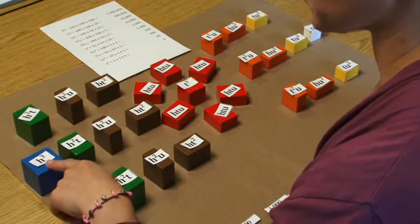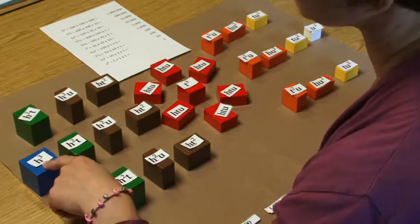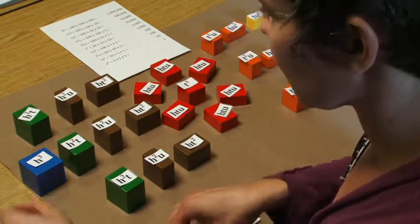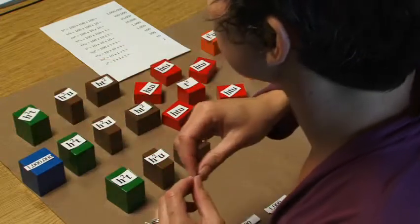We're going to start with our blue king, our hundreds cubed. We know that that is 100 times 100 times 100, and we can trade that for 1 million.